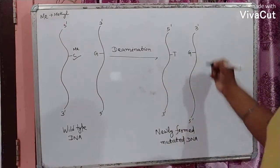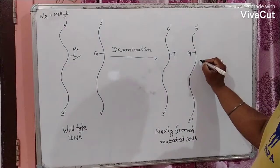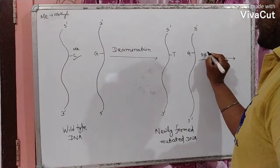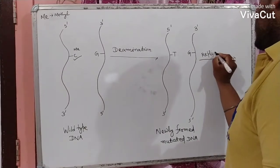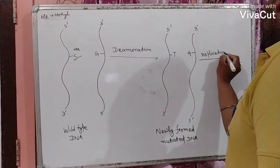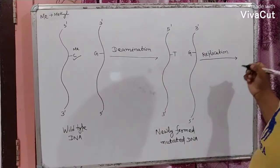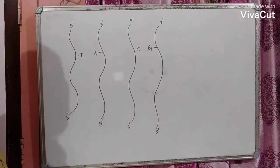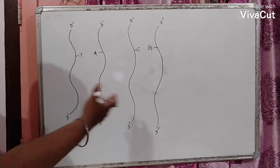And this newly formed mutated DNA then undergoes replication and will produce two new DNAs. So, these are the two new DNAs formed after replication.